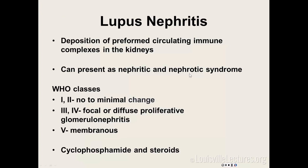Lupus nephritis has six WHO classification types. Types 1 and 2 don't require treatment. Types 3 and 4 will look like MPGN or rapidly progressive GN and must be treated. Type 5 is membranous — the biopsy looks like membranous, but complement will be low and ANA will be positive. Treat these patients as you would membranous and also treat for lupus.